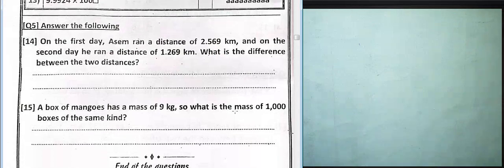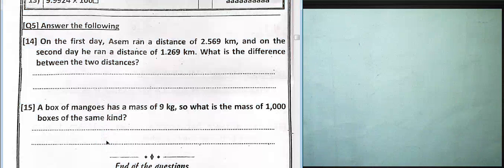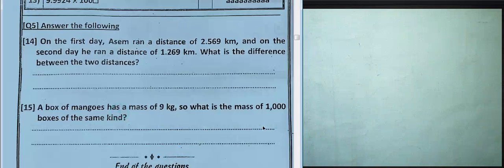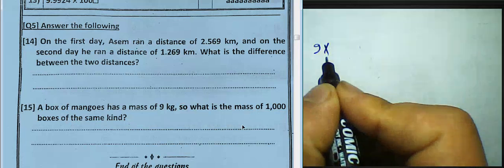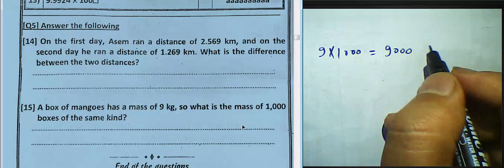Question 15: a box of mangoes has a mass of 9 kilograms. What is the mass of 1000 boxes of the same kind? We multiply 9 by 1000. The result is 9,000 kilograms.